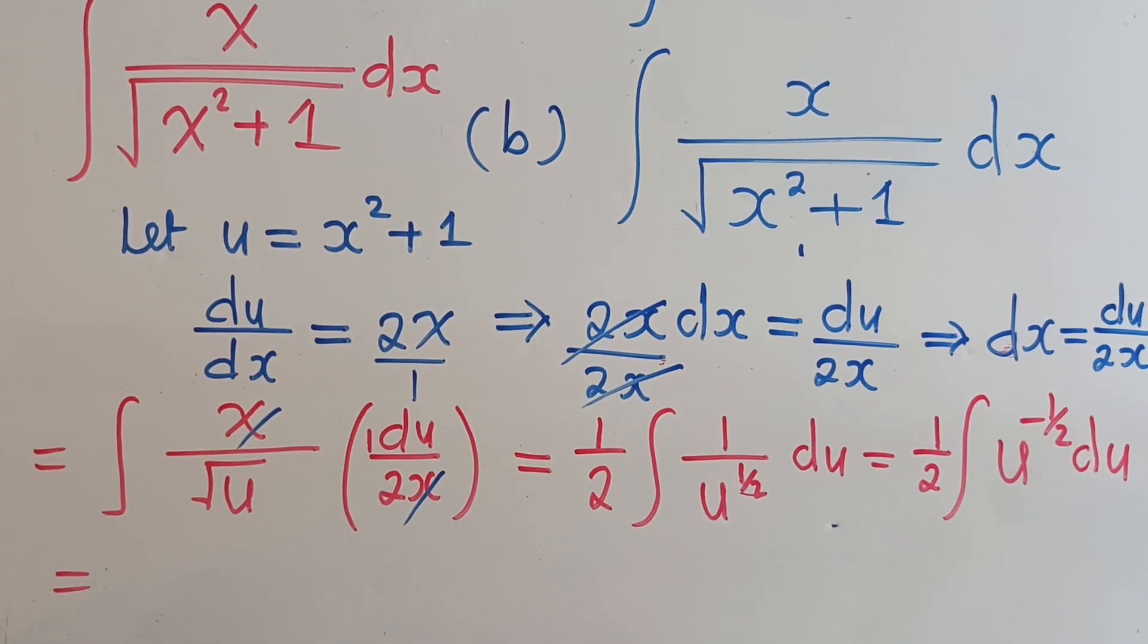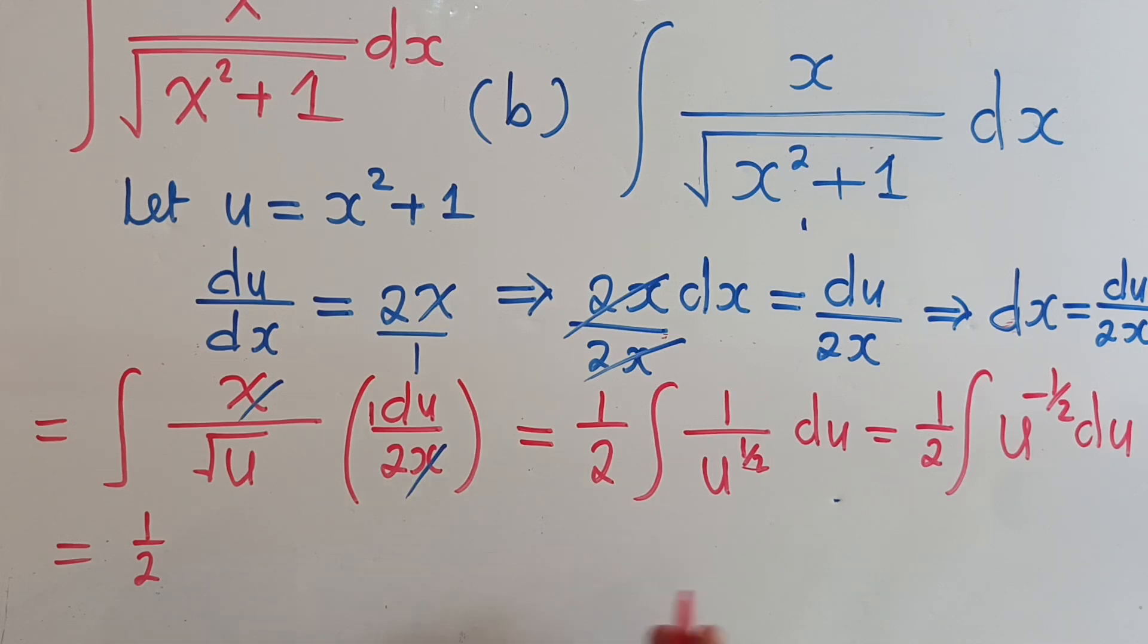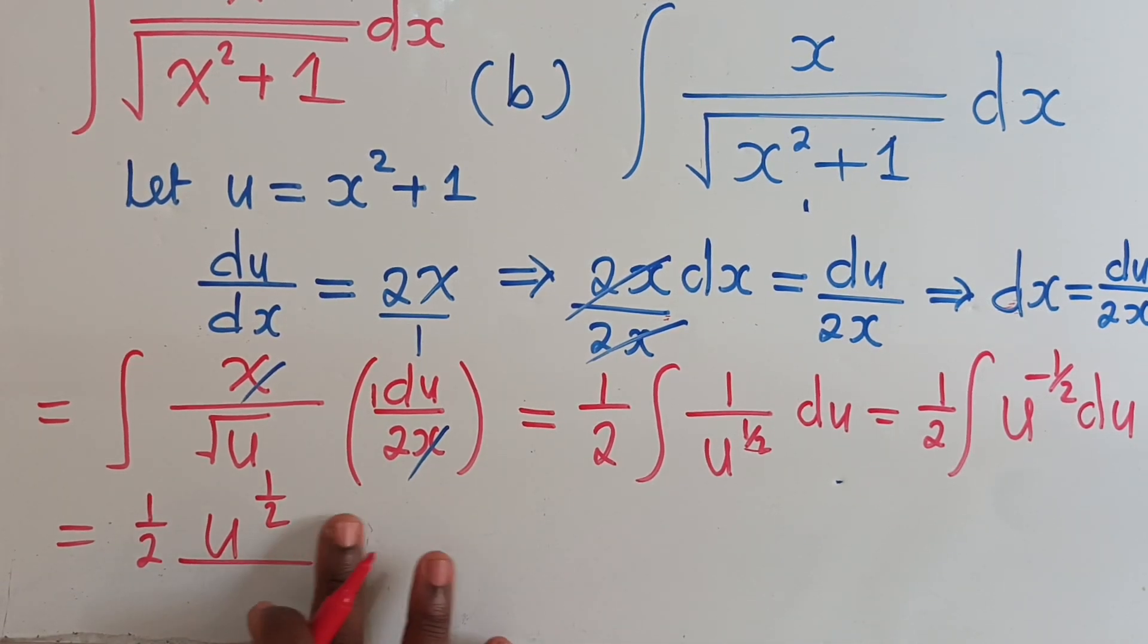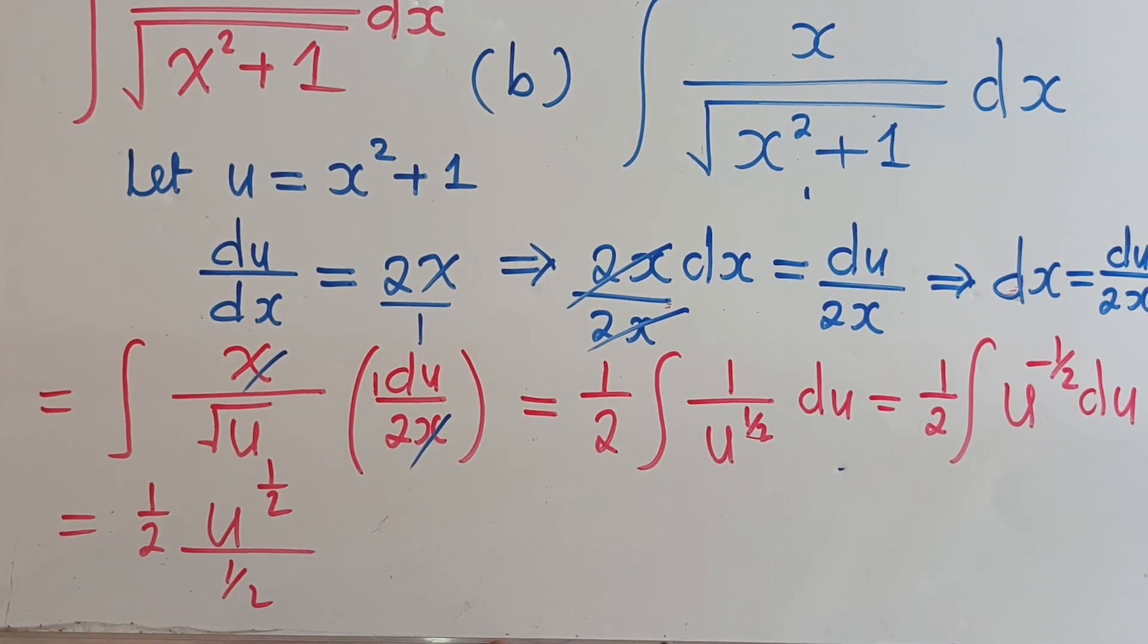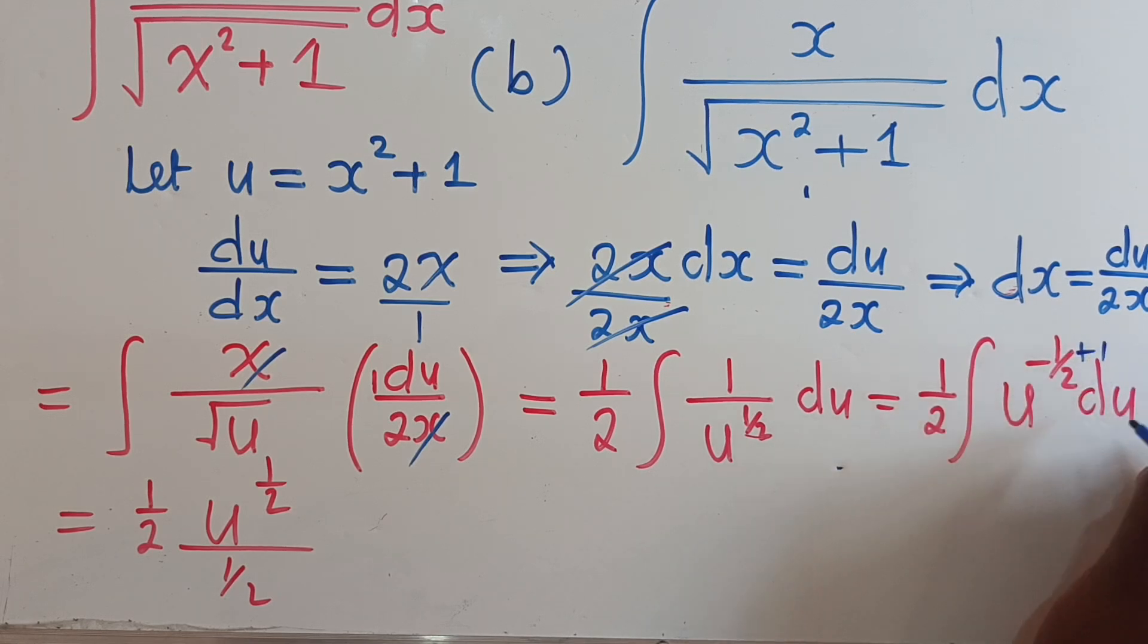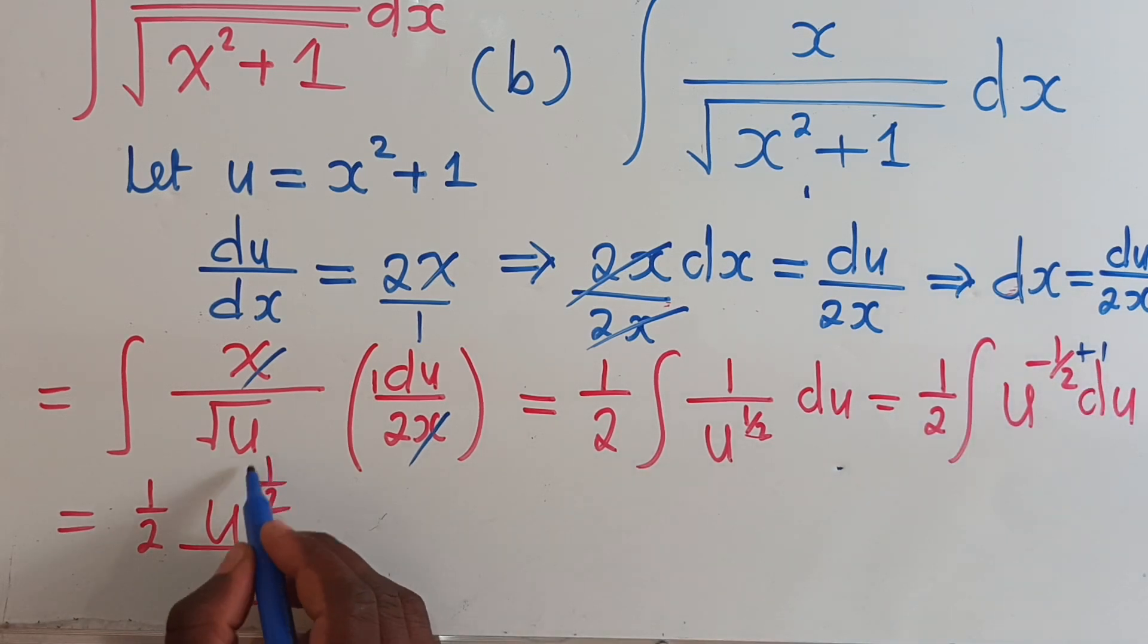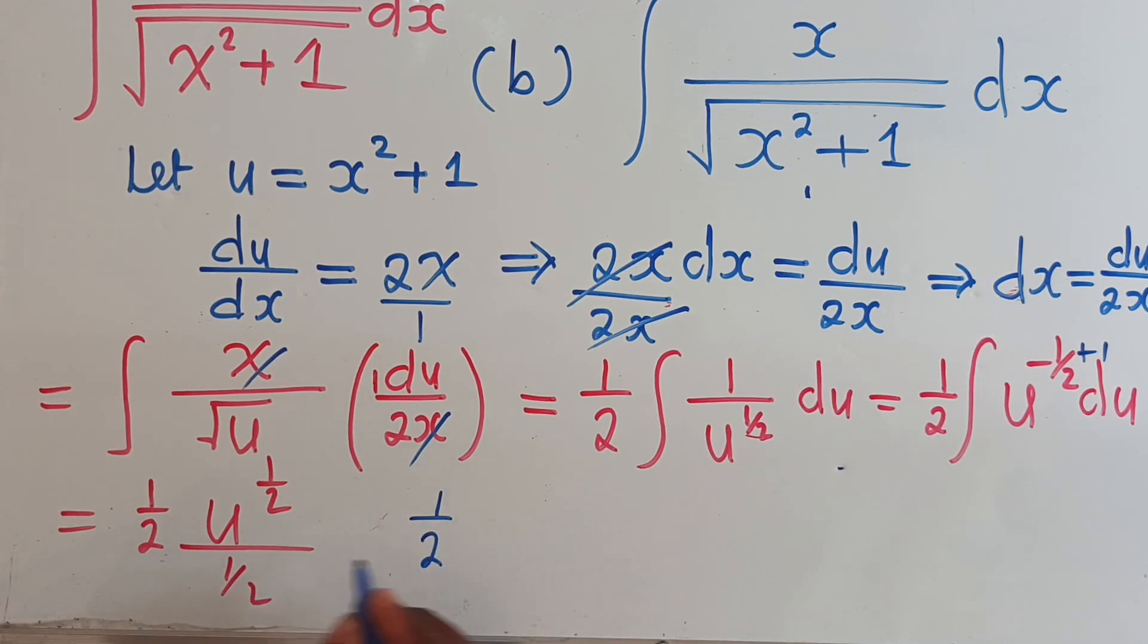We're going to have one-half, and then here u power one-half, divide by one-half. I know you may be wondering what has just happened here. When integrating, we all know that we add a one to the power. So negative one-half plus one will give us one-half, which is this new power. And then we divide by this new power right here.